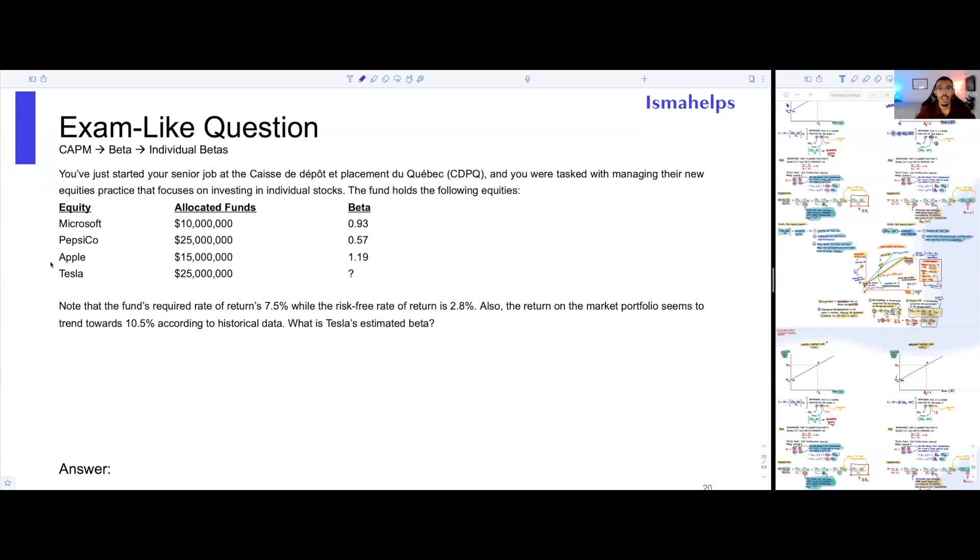Okay, so here's another video on the capital asset pricing model, and we're going to talk about beta, and more especially, we're going to talk about solving for individual betas. But this is a very cool question. We've done a similar one on my YouTube channel, but this one is maybe slightly different and uses actual data from Microsoft, PepsiCo, Apple, and Tesla. So it's going to be slightly fun, a little bit different.